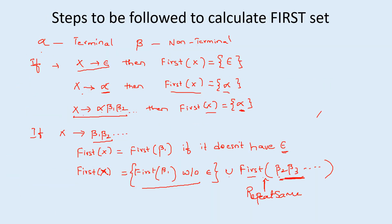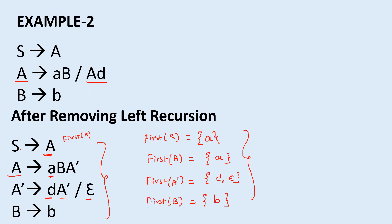To summarize the steps: if x → ε, first of x is epsilon; if x → terminal, first of x is the terminal; if x → terminal followed by non-terminals, first of x is the terminal. If x → a set of non-terminals, first of x is first(β1) if it has no epsilon; if it does, take first(β1) without epsilon union first of all remaining symbols, and repeat the process until there is no epsilon. That is the procedure to find the first set. If you have any doubts, post them in the comments. If you enjoyed the session, like, share, and subscribe. Thanks for watching.